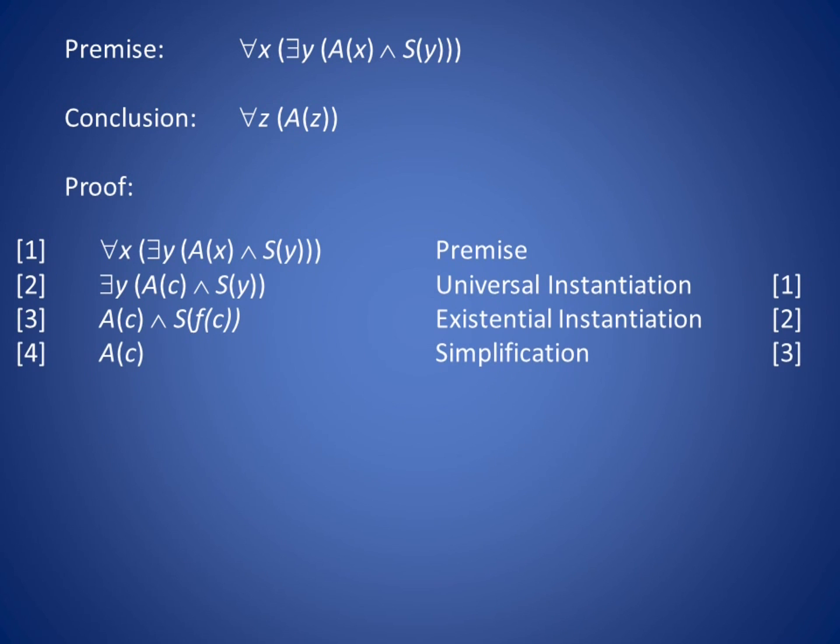On line 4, we simplify to just A of c, and then, since c is an arbitrary symbol, we are allowed on line 5 to generalize universally to for all z, A of z.